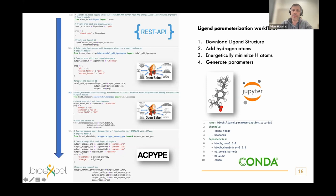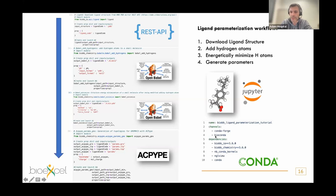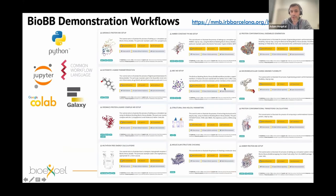Putting both ideas together — interoperability with uniform syntax and Conda packaging — we can already build a first BioBB workflow. This is a ligand parametrization workflow: downloading a small molecule using a REST API, adding hydrogen atoms and minimizing their energy using OpenBabel, and generating parameters with ACPype. We build the workflow by joining the output of one building block with the input of the next in a very easy way. Then we build a YAML file telling Conda how to generate the environment needed to reproduce this workflow.